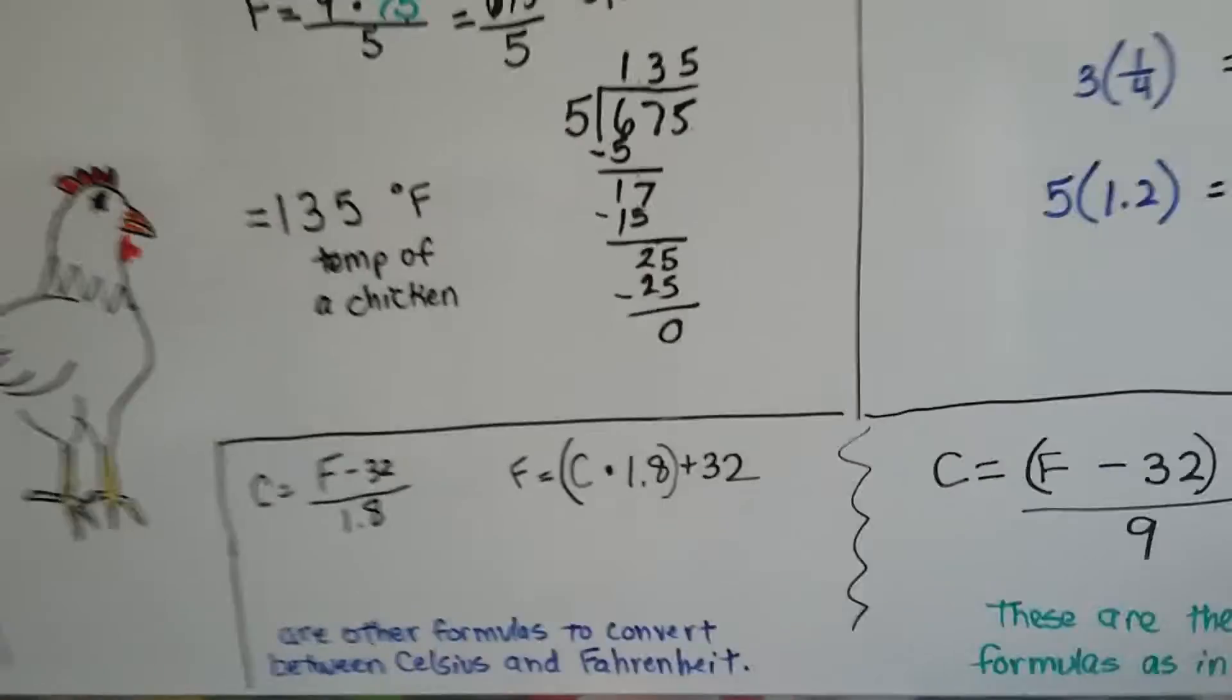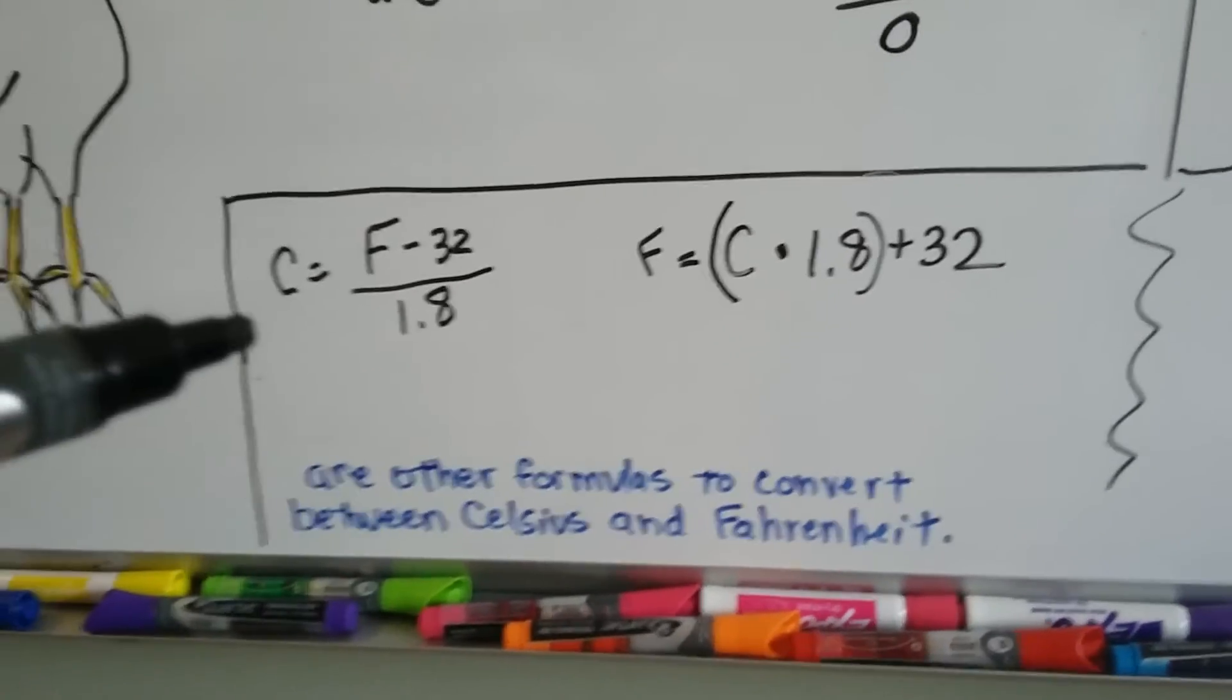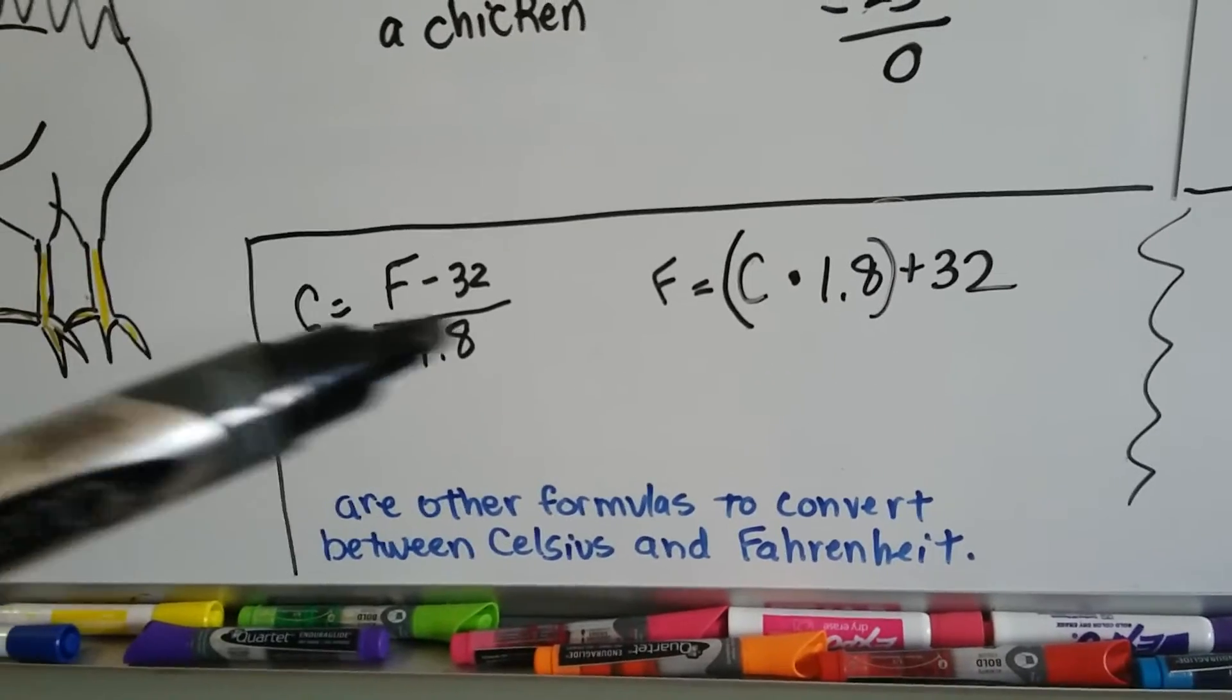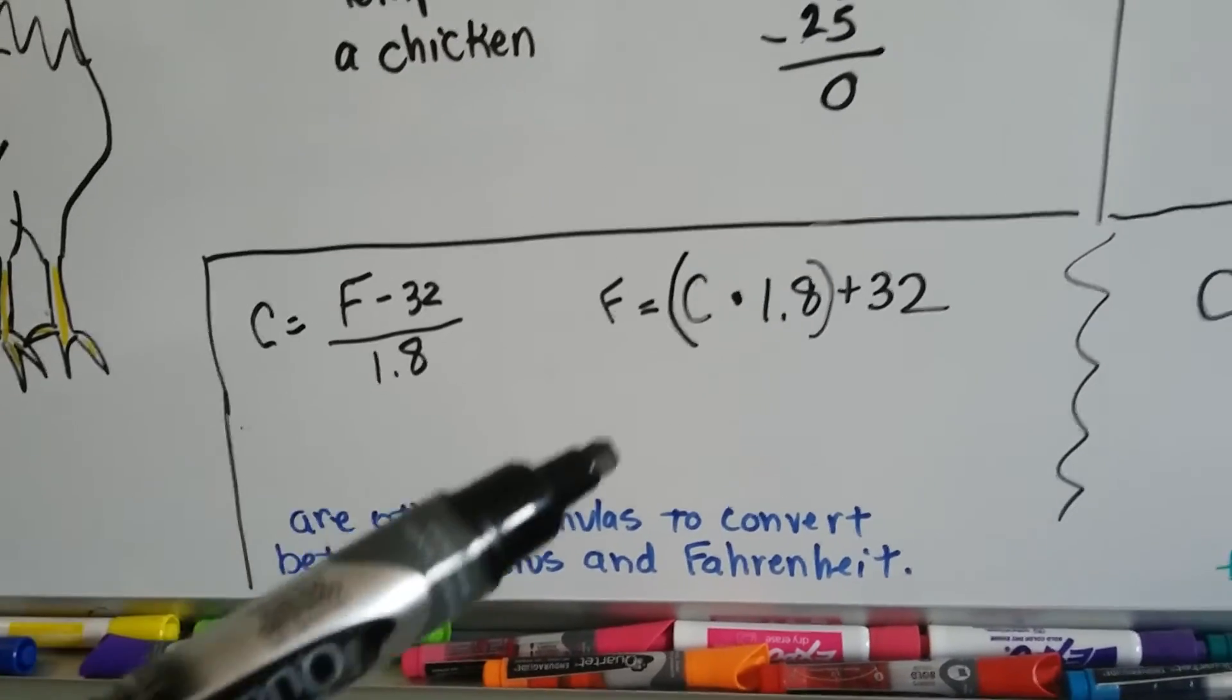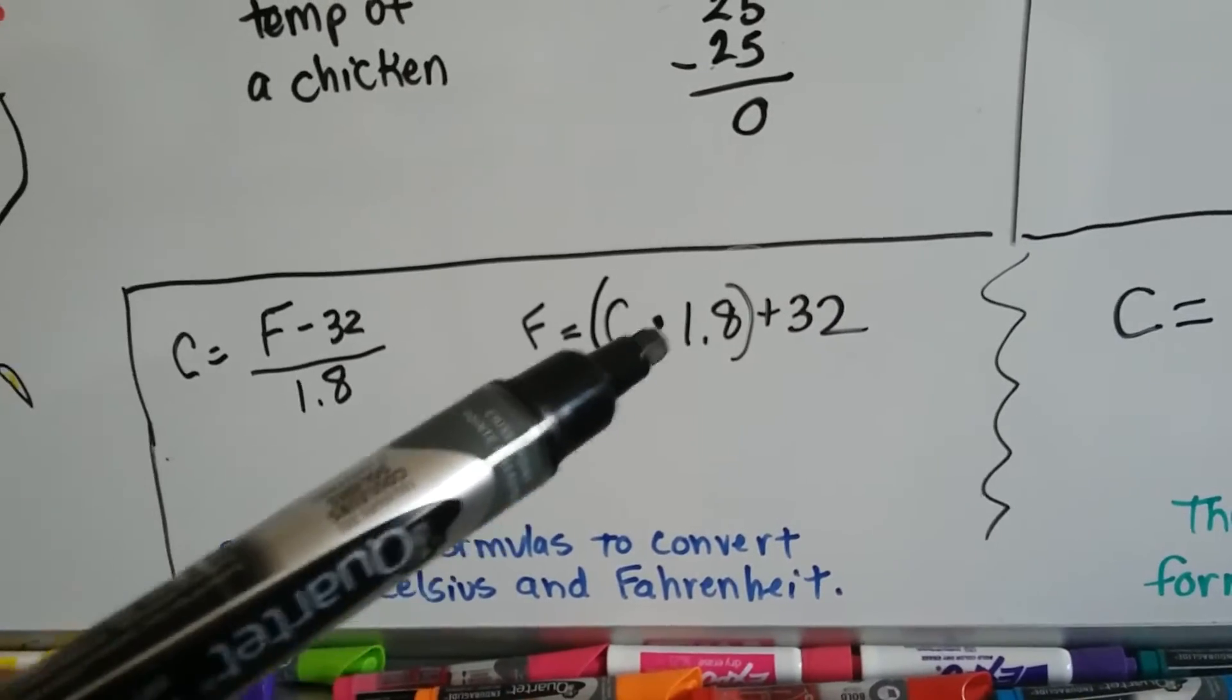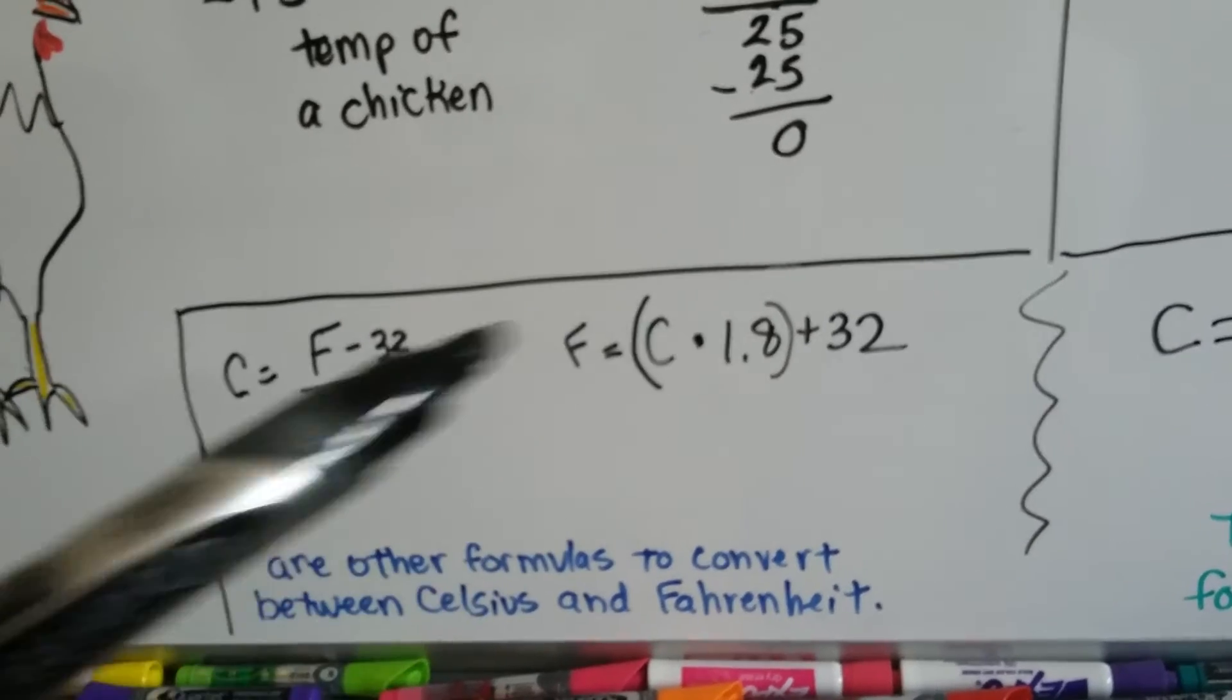Now there's other ways, other formulas to use. I found that you could do Celsius is equal to Fahrenheit minus 32 and divide it by 1.8, and you could find Fahrenheit by doing Celsius times 1.8 plus 32. So multiplication is the opposite of division.